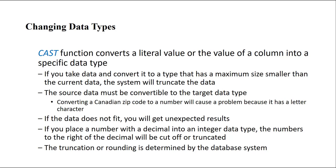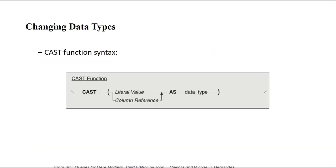The CAST function syntax is simple: you write CAST, open parentheses, type the value you want to change, then the keyword AS, then the data type you want to convert to. For example, you do some operation and then store it as a specific data type. That's the simple syntax of the CAST function.